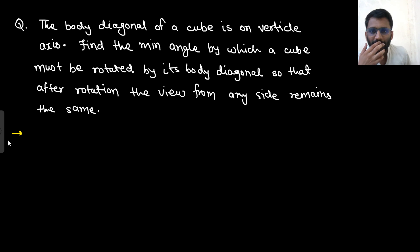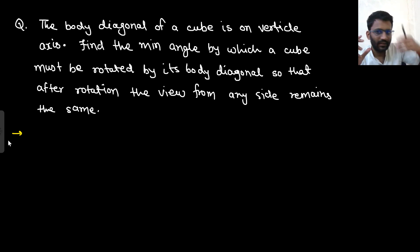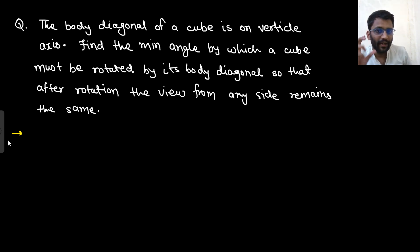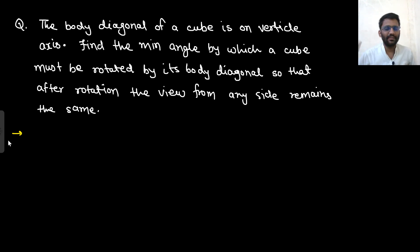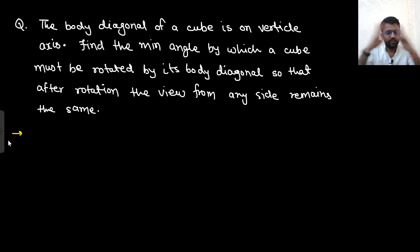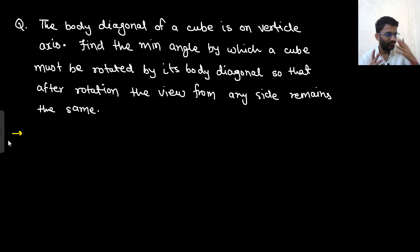Let's read the question first: the body diagonal of a cube is on the vertical axis. Find the minimum angle by which a cube must be rotated about its body diagonal so that after rotation, the view from any side remains the same. In a cube, there are face diagonals and there are body diagonals.